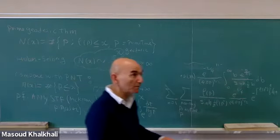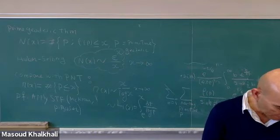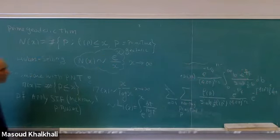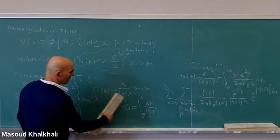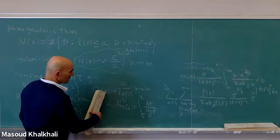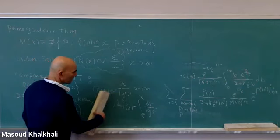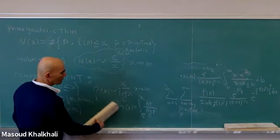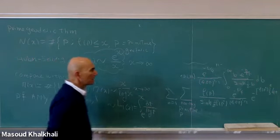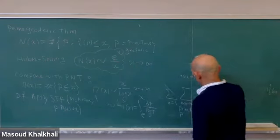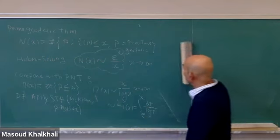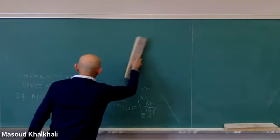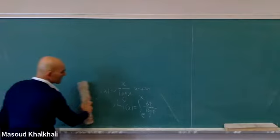The main thing I want to finish with is the Selberg zeta function, which is the first step towards the Riemann hypothesis in this setting. The Riemann hypothesis is a refinement of the prime number theorem in the sense that it gives you the correction term — the order of the remainder. In this case too, there is a Riemann hypothesis, but here it was actually proved to be true.